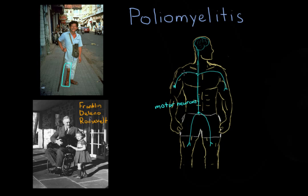Another way to think of neurons is like electrical wires that provide electricity to your home. If you shut off these electrical wires, your home will no longer have any electricity. The motor neurons act in the same way — you can no longer power your muscles from these neurons after the poliovirus damages them.